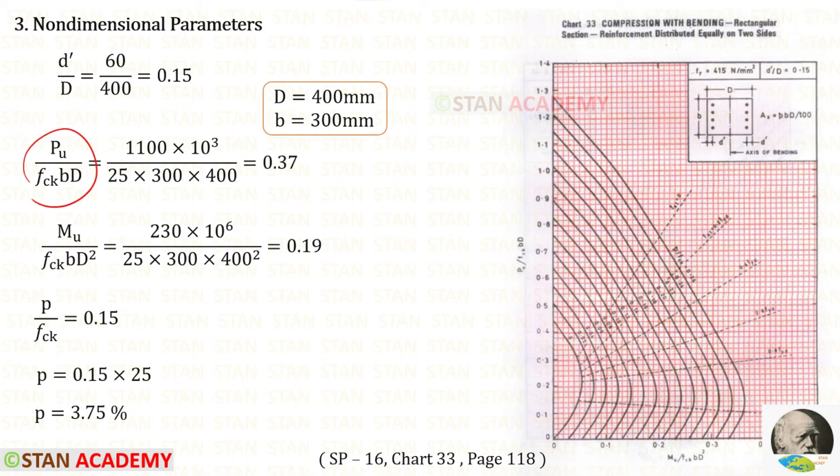For Pu upon Fck BD, we have got 0.37. This is 0.3, this is 0.32, this is 0.34, this is 0.36, and this one is 0.38. 0.37 comes between 0.36 and 0.38. So in between them, we have to make a line.